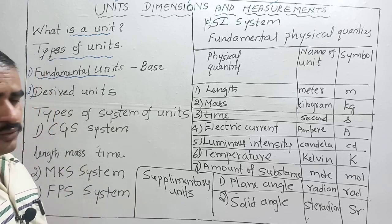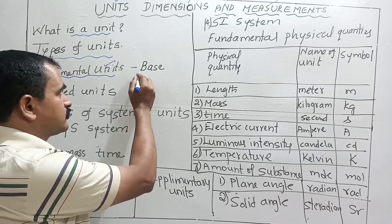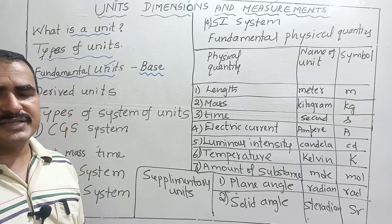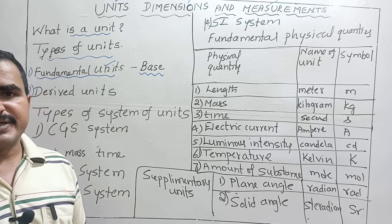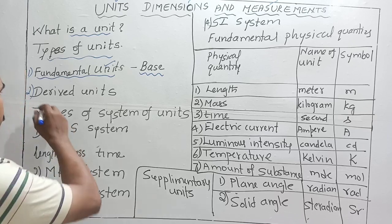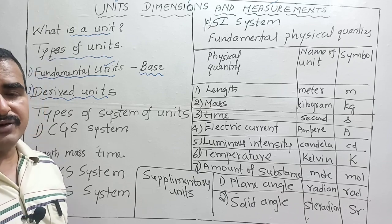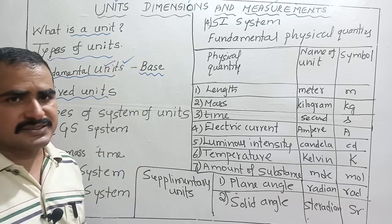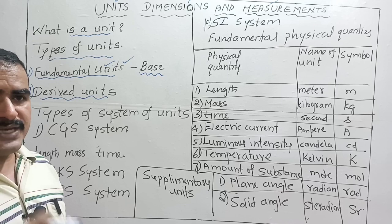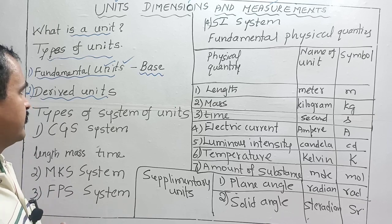Now, fundamental physical quantities are also called base quantities. Base quantities are independent physical quantities. Derived physical quantities are obtained by combining two or more base physical quantities together to give a derived physical quantity.